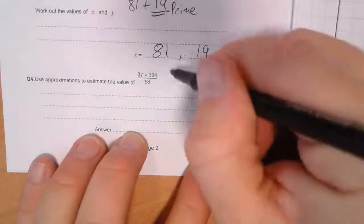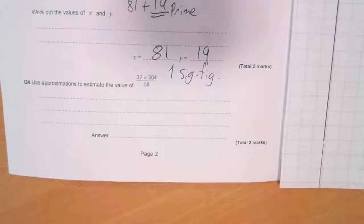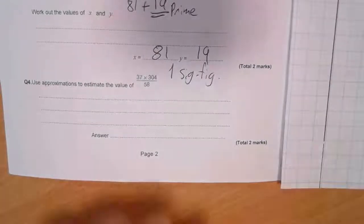When we're doing estimations, we use one significant figure. So we need to round each of these to one significant figure.